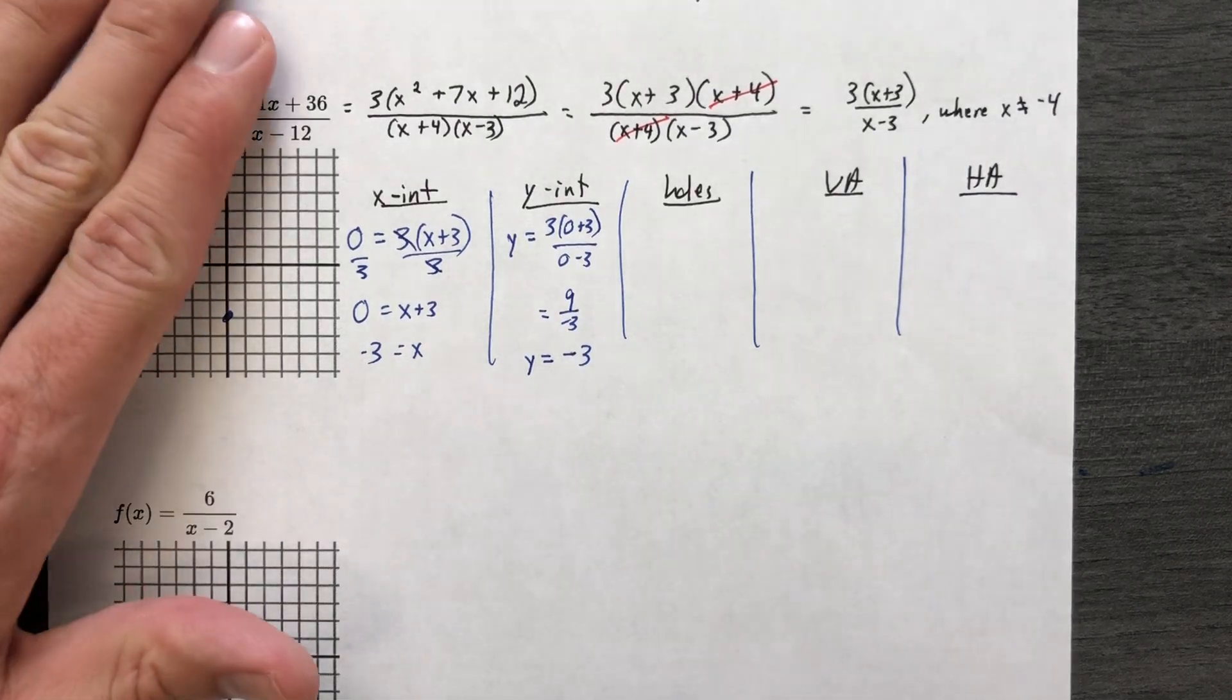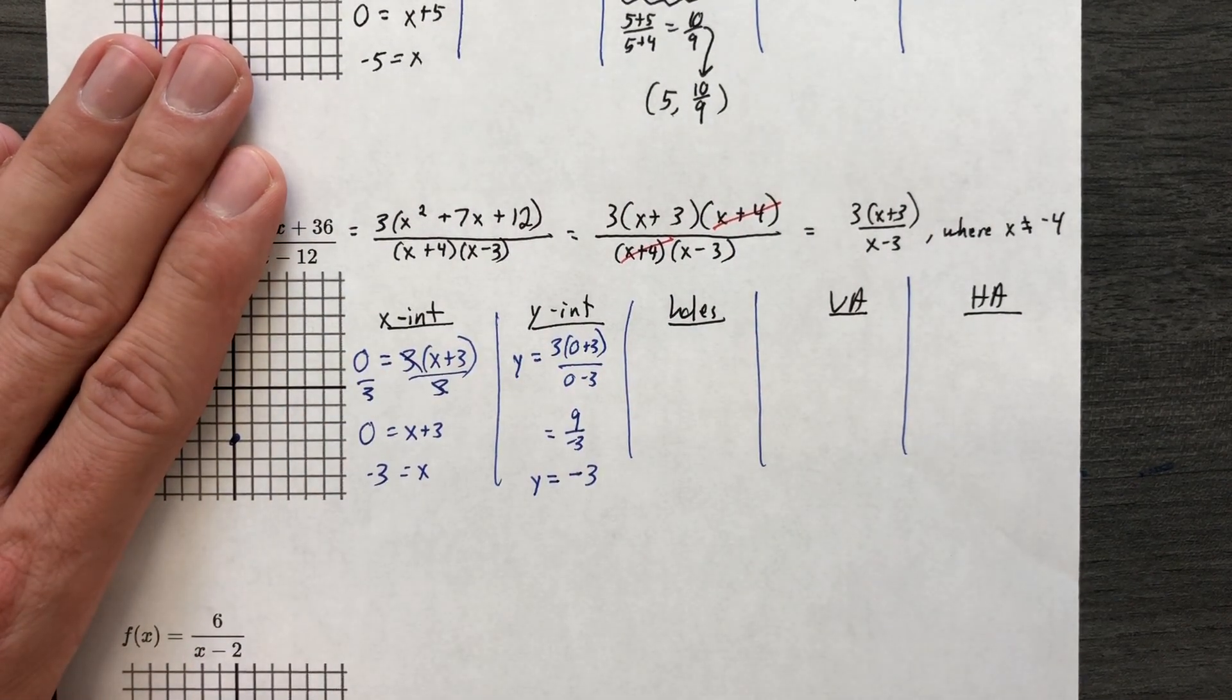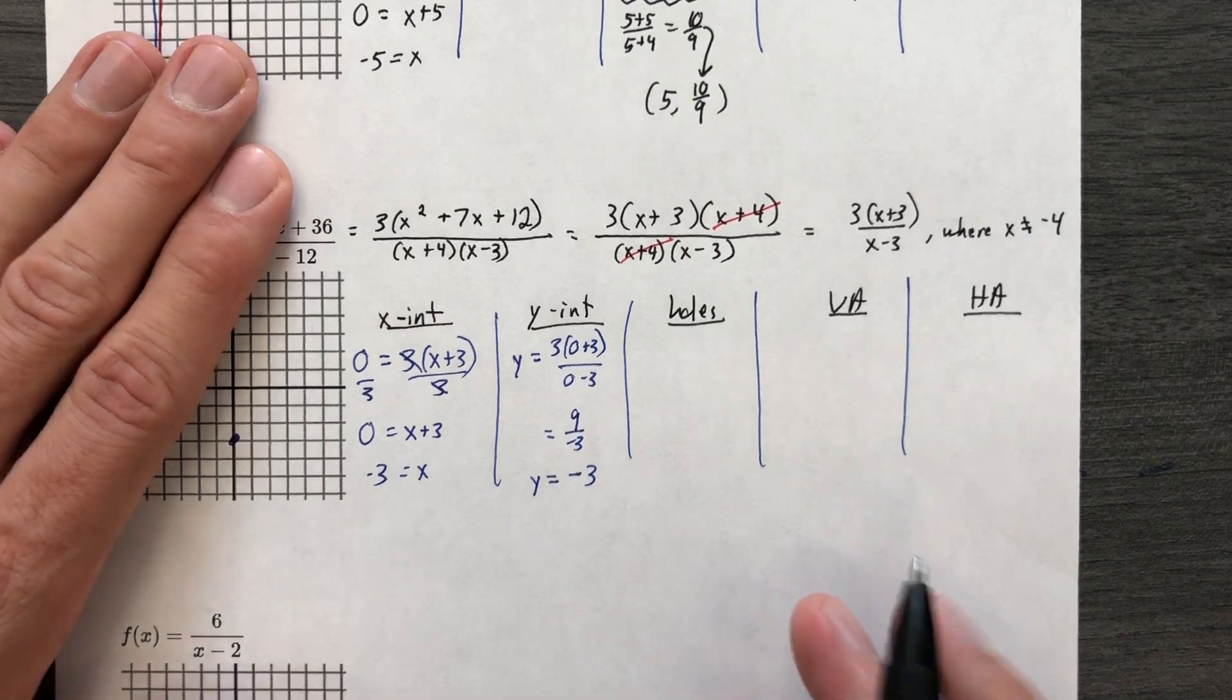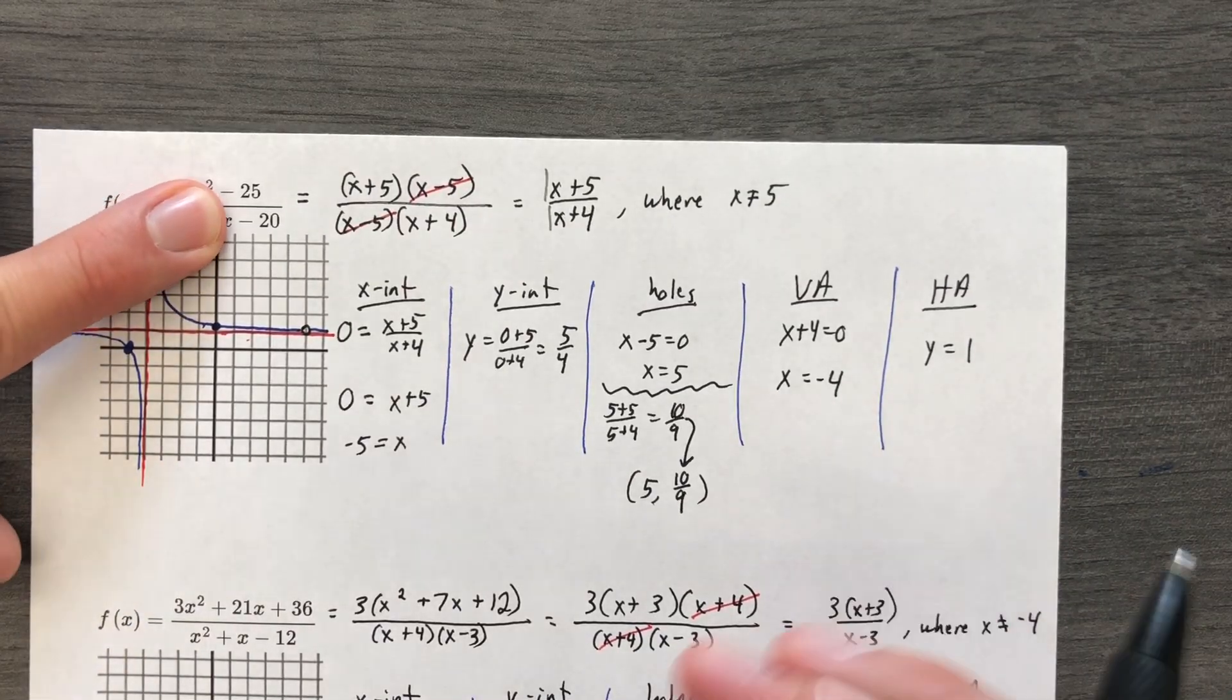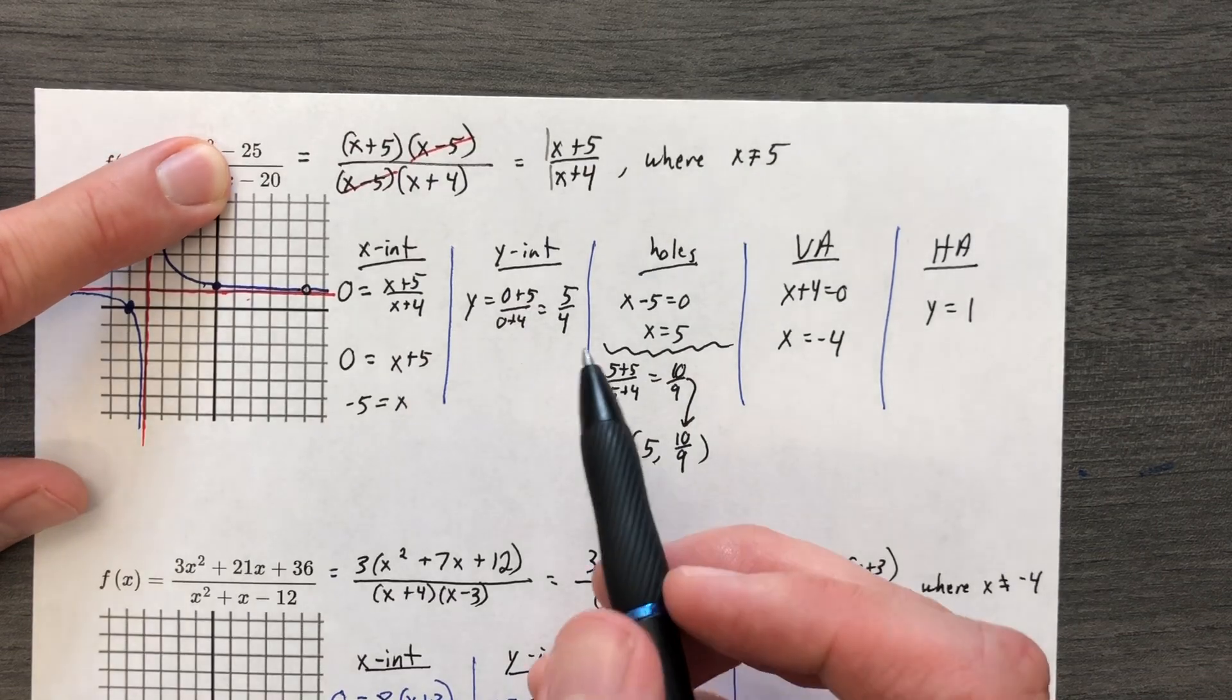Of course you do. Cover up all your x's. What's 36 divided by negative 12? Exactly. Negative 3. Look up here. You better look up here. What's negative 25 divided by negative 20? Positive 5 fourths. You're welcome.